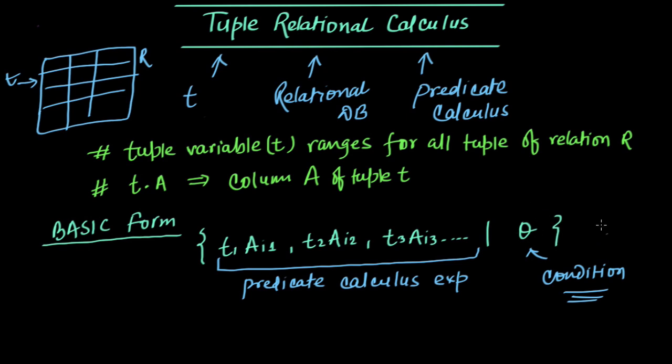So once the tuples satisfy this condition, then these columns from those tuples will be taken out. That will be the output of this tuple relational query. What is done: first from the relation we get a relation which satisfies this condition, and then we take out the columns. Let's understand this with an example.